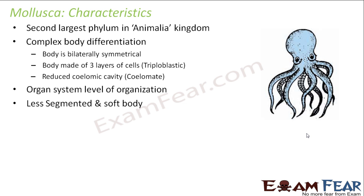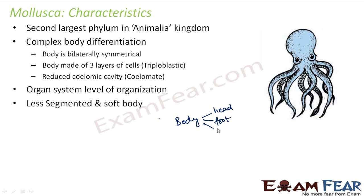The outer surface of the body is covered by a calcareous shell. The body can be divided distinctly into three parts: head, foot, and hump. The foot is muscular and it helps in movement. The head consists of all the sensory organs, and the hump is the portion which connects the head and the foot.